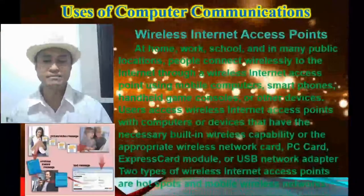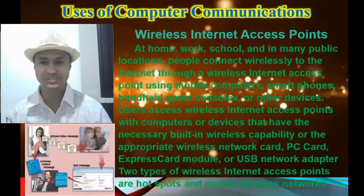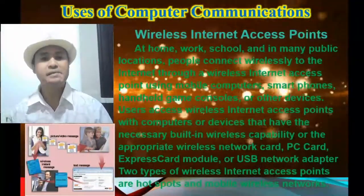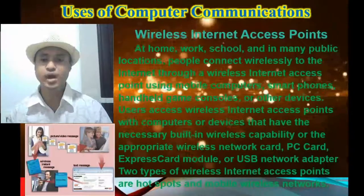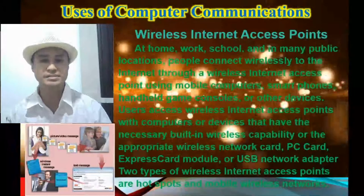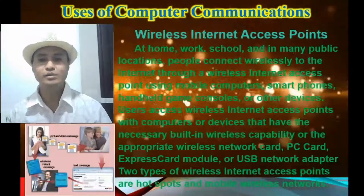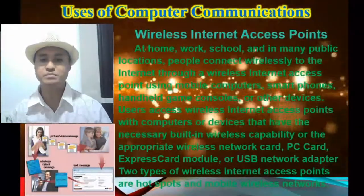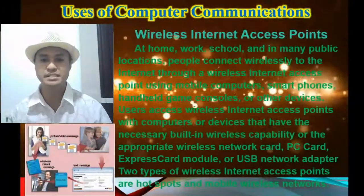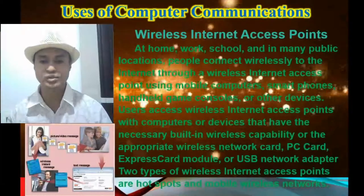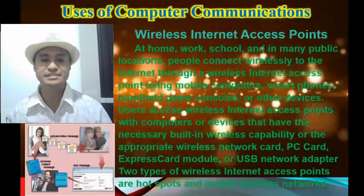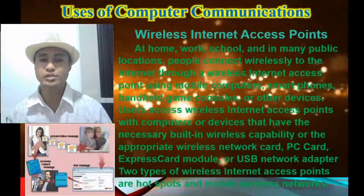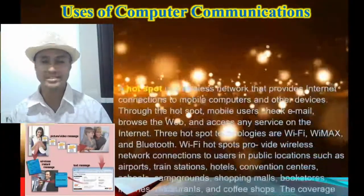We also have wireless internet access points. At home, work, school, and in many public locations, people connect wirelessly to the internet through a wireless internet access point using mobile computers, smartphones, handheld game consoles, or other devices. Users access wireless internet access points with computers or devices that have built-in wireless capability or the appropriate wireless network card, PC card, access card module, or USB network adapter. Two types of wireless internet access points are hotspots and mobile wireless networks.